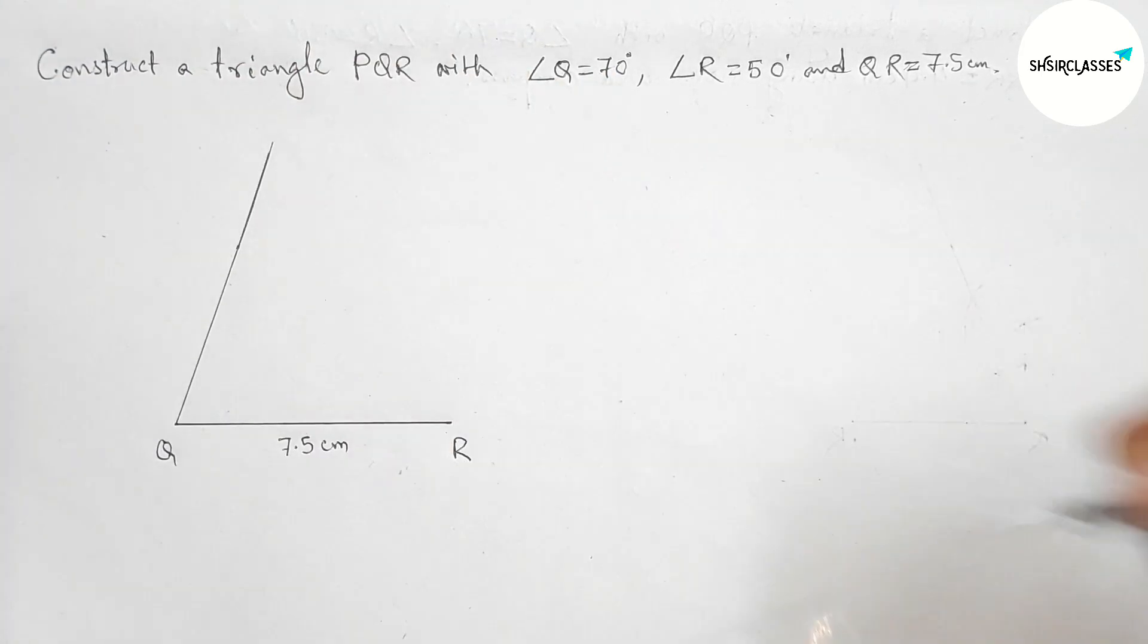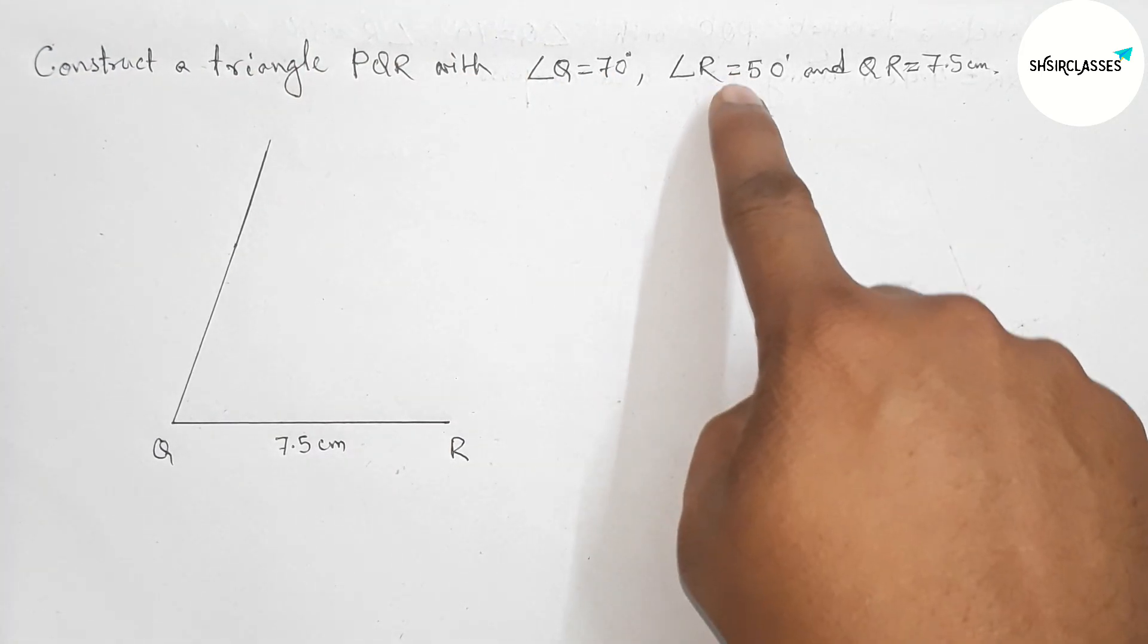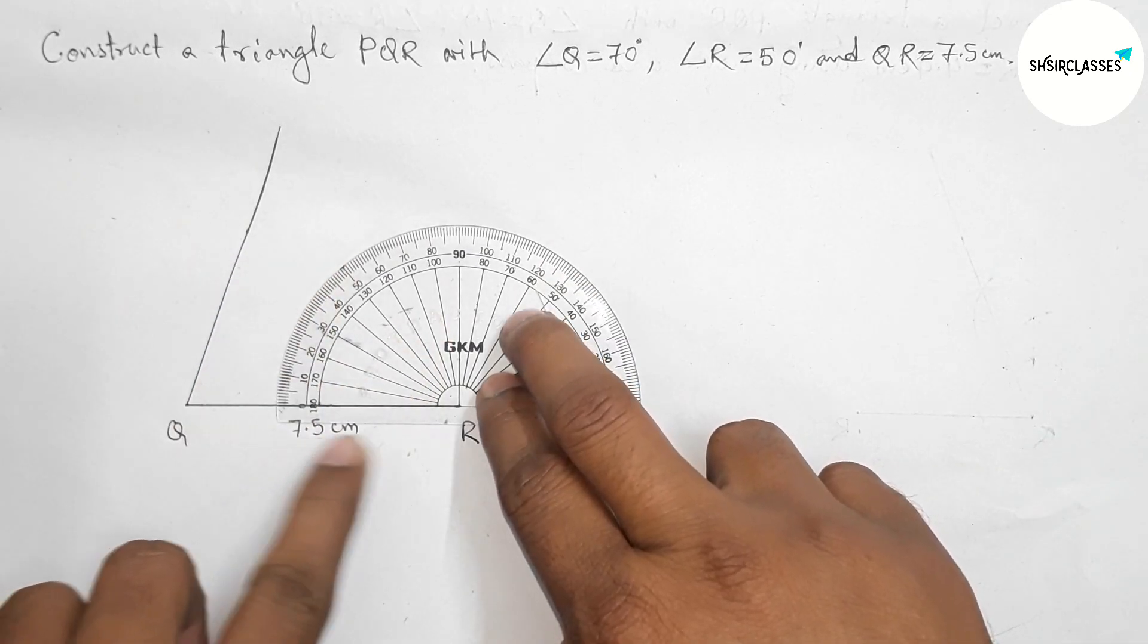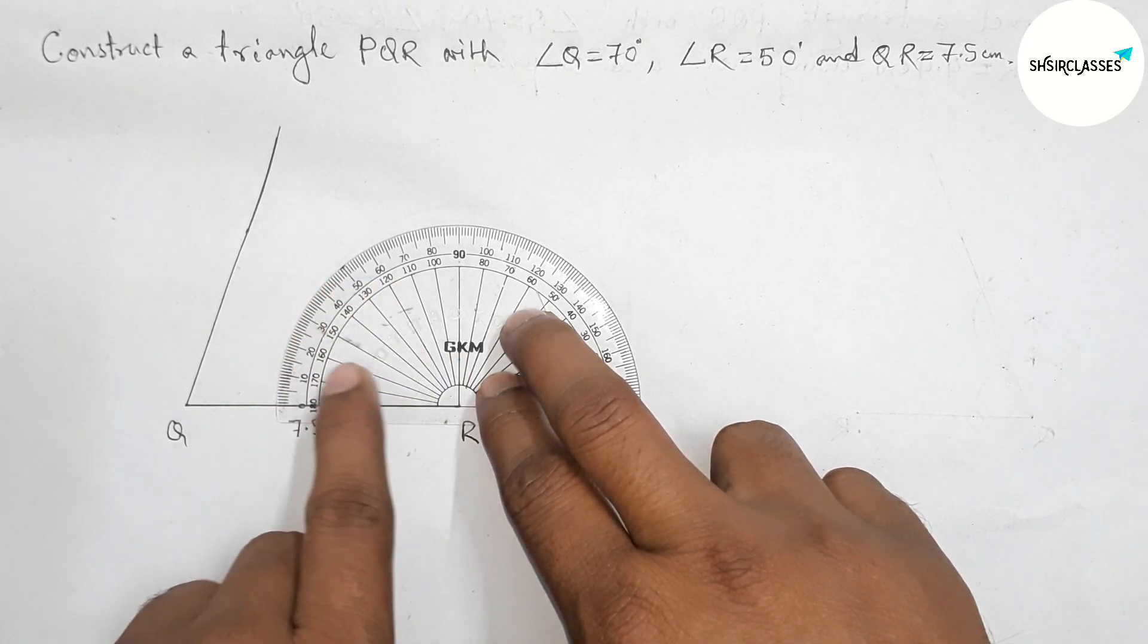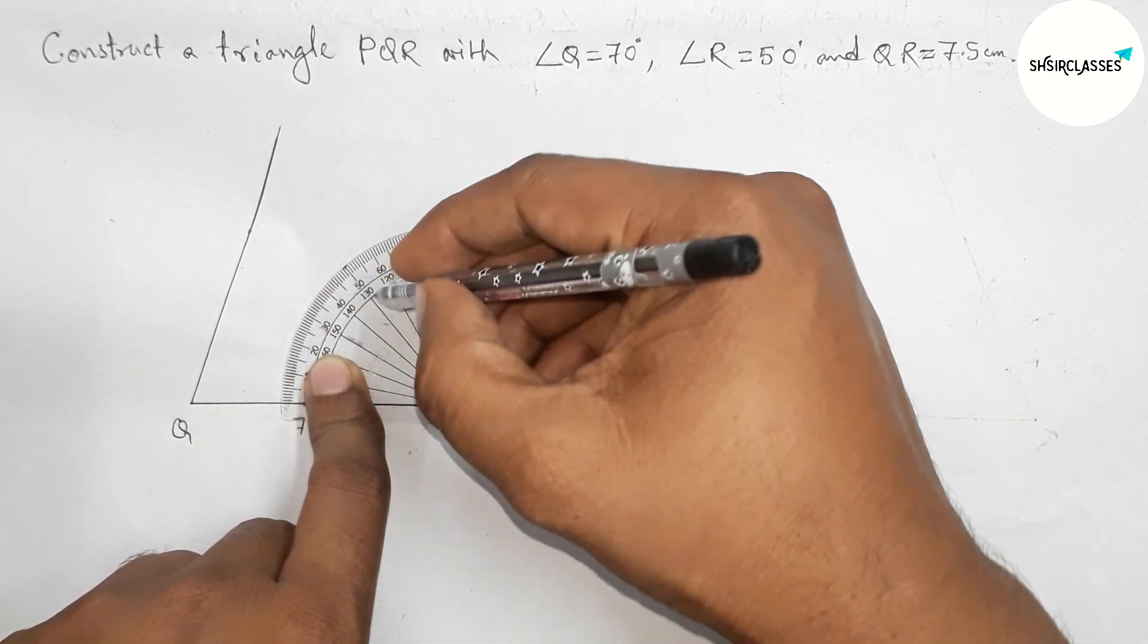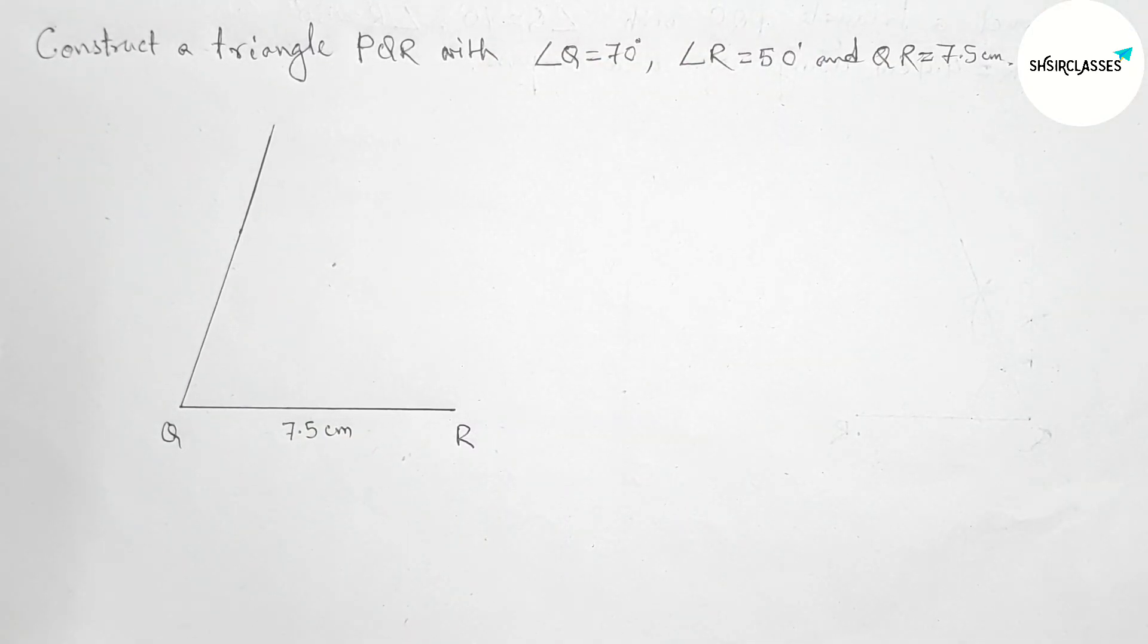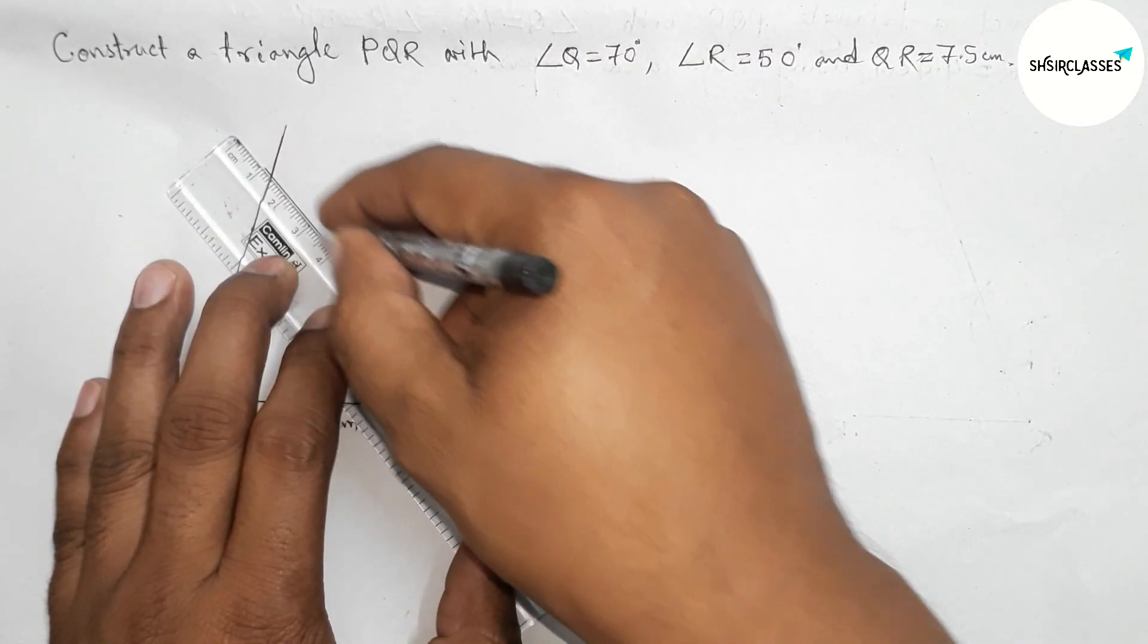Next, draw a 50 degree angle on point R with the help of the protractor. Place the protractor and count 50 degrees. First, mark here - this is 50 degrees. Then join this line to get 50 degrees.